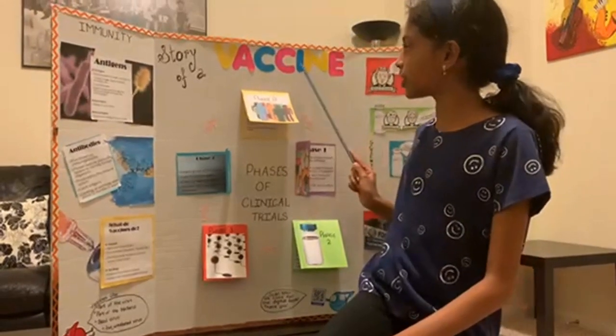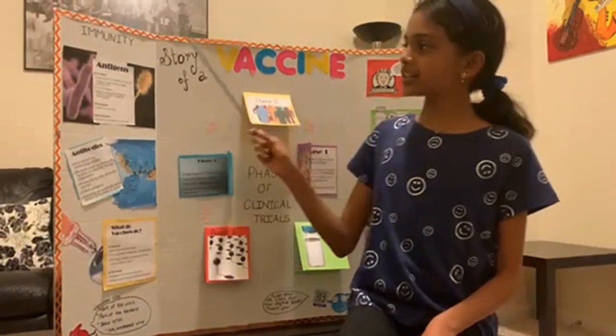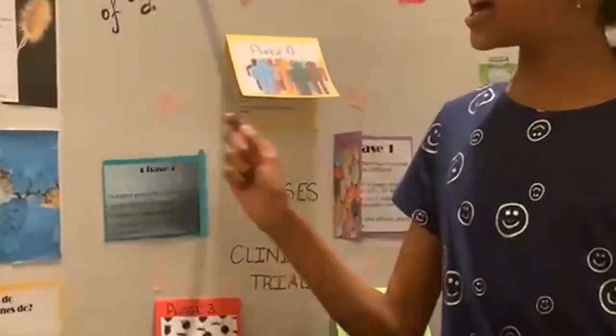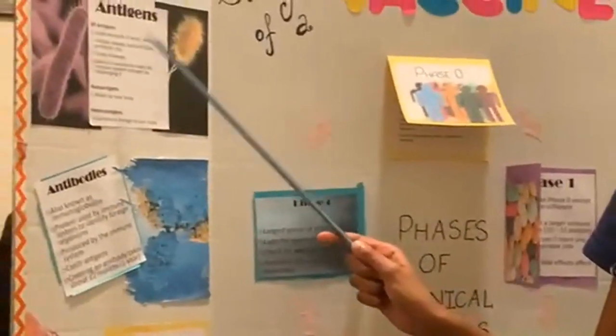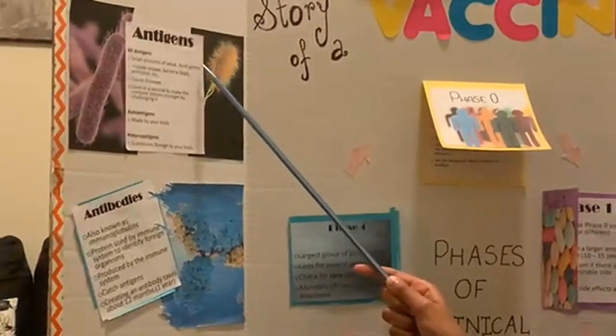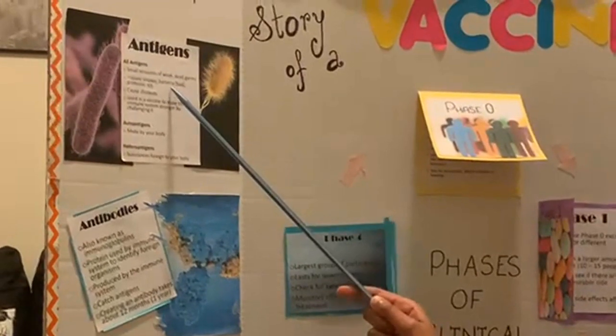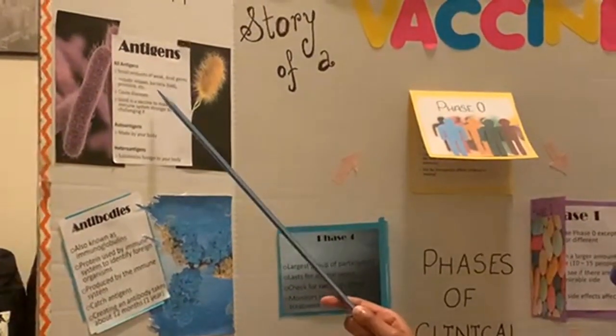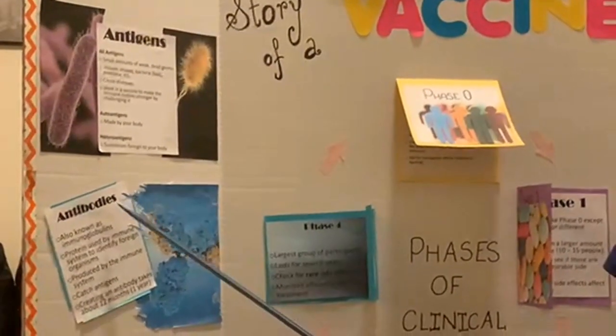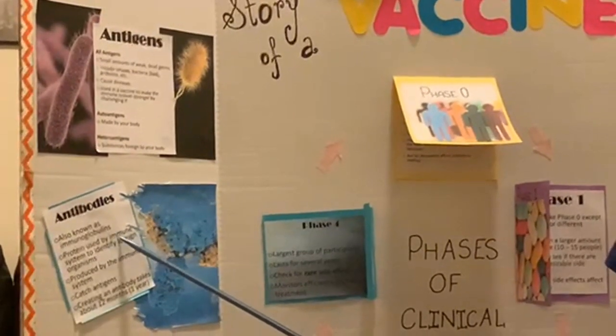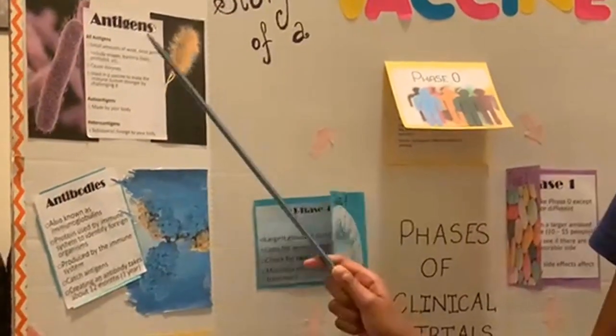Now I will show you my tripod called Story of a Vaccine. First, I will be telling you about immunity. I explored the difference between antigens, which are small amounts of weak, dead germs, including viruses, bad bacteria, and protozoa, versus antibodies, which is protein used by the immune system to catch antigens.